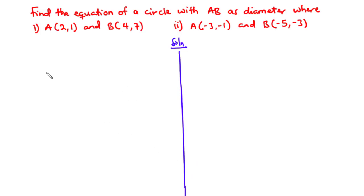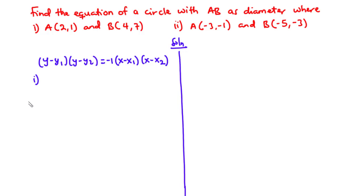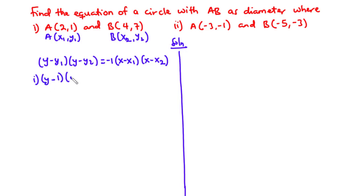The equation of a circle given the ends of the diameter is: (y minus y1)(y minus y2) equals negative 1 times (x minus x1)(x minus x2). For example (i), substituting A(2,1) and B(4,7): we get (y minus 1)(y minus 7) equals negative 1 times (x minus 2)(x minus 4).